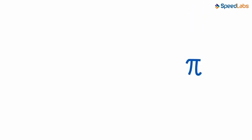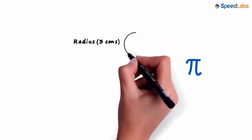What is Pi? Let's assume we are asked to draw a circle of radius 3 centimeters. So we draw a circle like this.